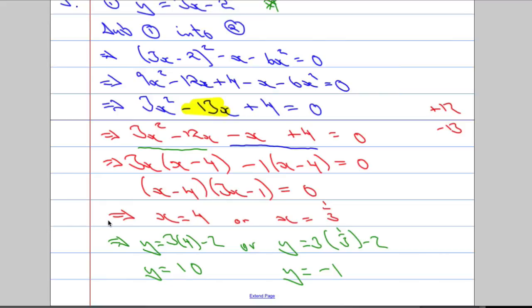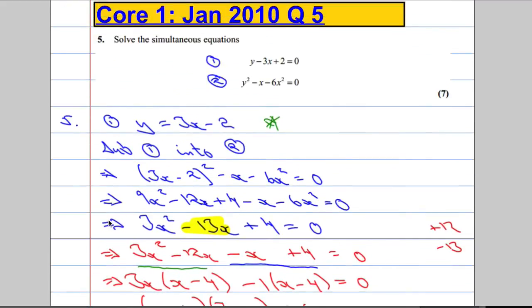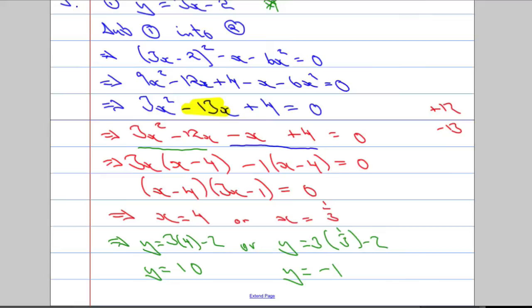So there's the value of x and the corresponding values of y. Was I asked for any coordinates? I wasn't. But we could state them. Points of intersection are going to be 4, 10, and 1 over 3, negative 1.